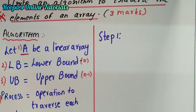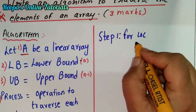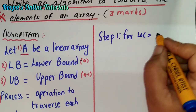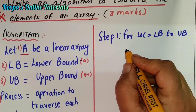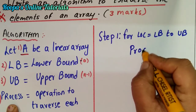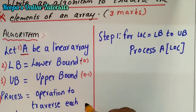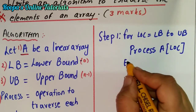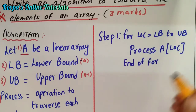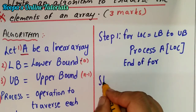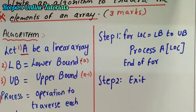Now we will write the algorithm. Step 1: We put a for loop to go through each and every element. For LOC equals LB to UB, process A[LOC] — that is, go to the location in the array. End for. Step 2: Exit. If you write these three lines, you get three marks. It's very easy — remember and write.